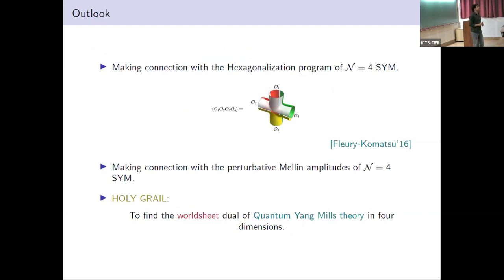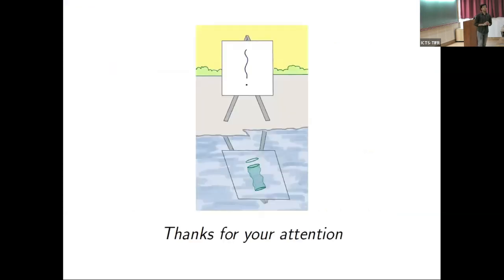For outlook, I want to mention that there is a recent program called hexagonalization, which uses some integrability of 2D integrable quantum field theories to compute the correlator of this supersymmetric Yang-Mills theory in terms of patching different hexagons. As there is a surface involved in this story, it is natural but likely that there is a connection to our program with this program. Second, I want to mention that there might be a connection with perturbative scattering amplitudes of this Yang-Mills theory. And of course, the Holy Grail is to find the string dual of quantum chromodynamics in 4D, which describes the physics of interaction of gluons and quarks. With that, I want to conclude my talk.